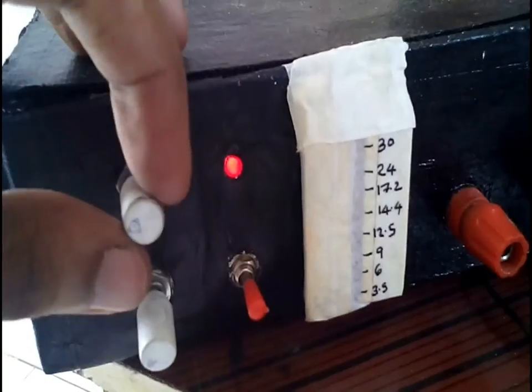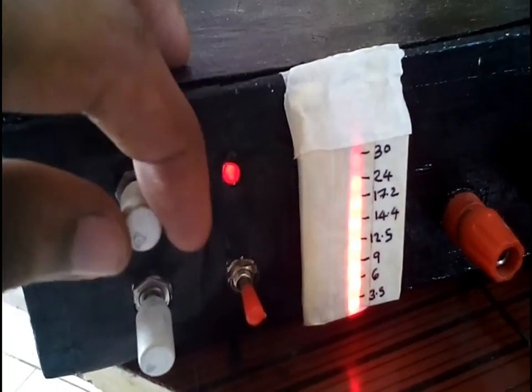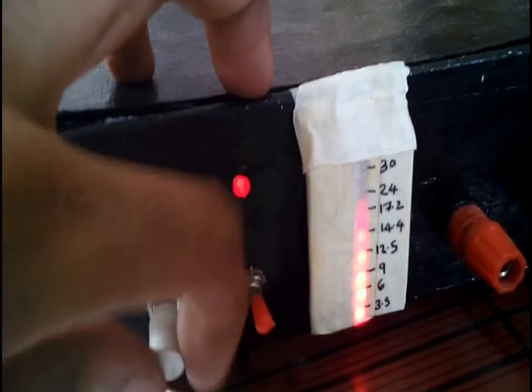Today we are going to see how we can make a simple voltage indicator or voltmeter using LEDs and Zener diodes.